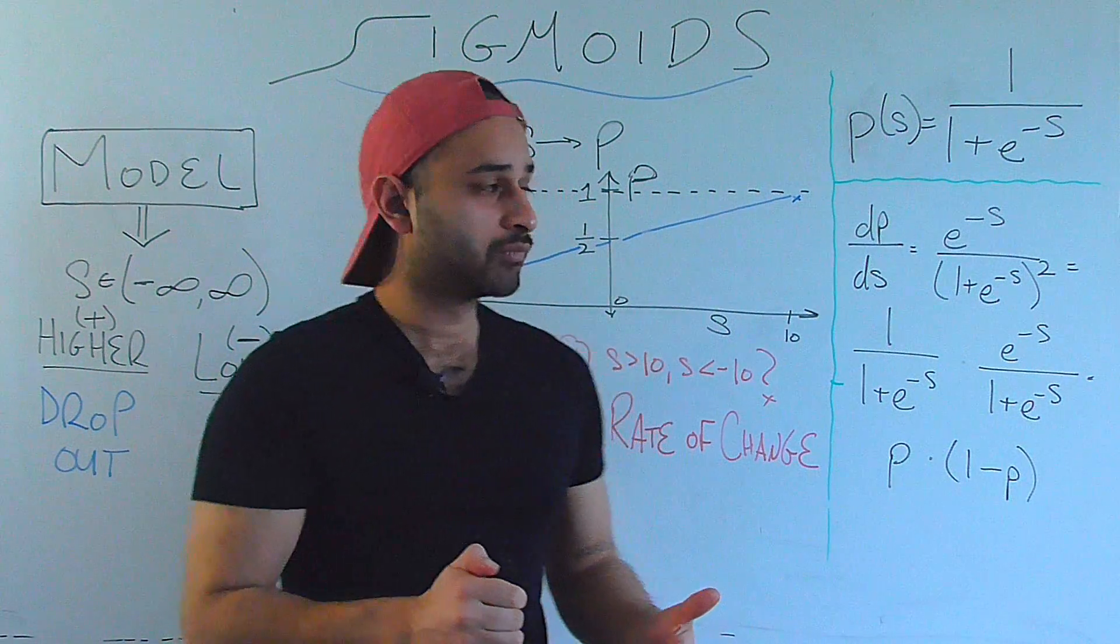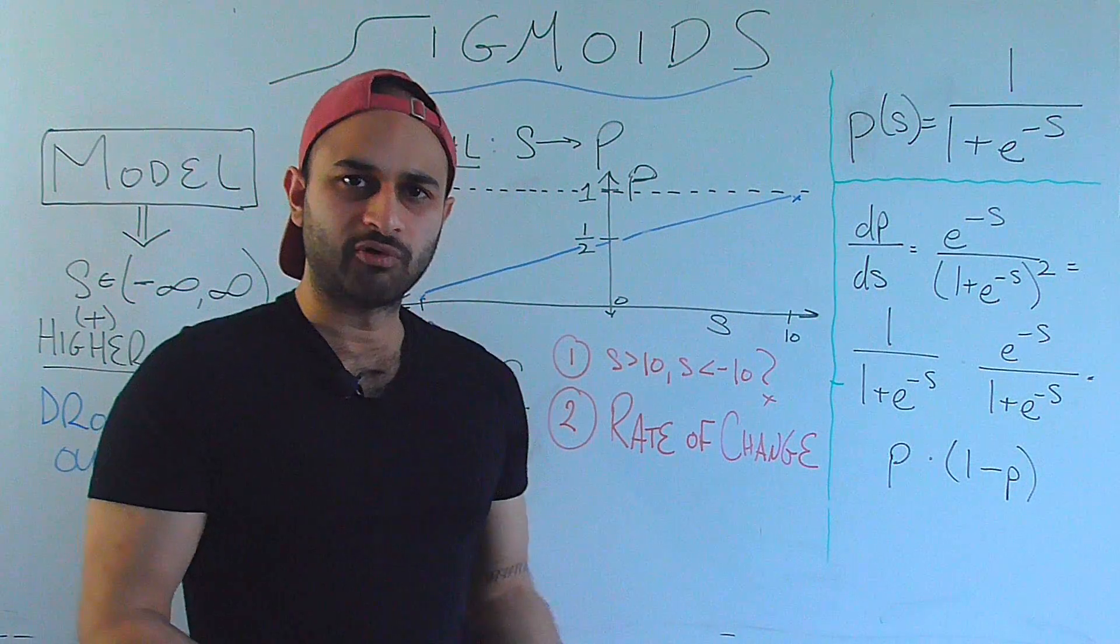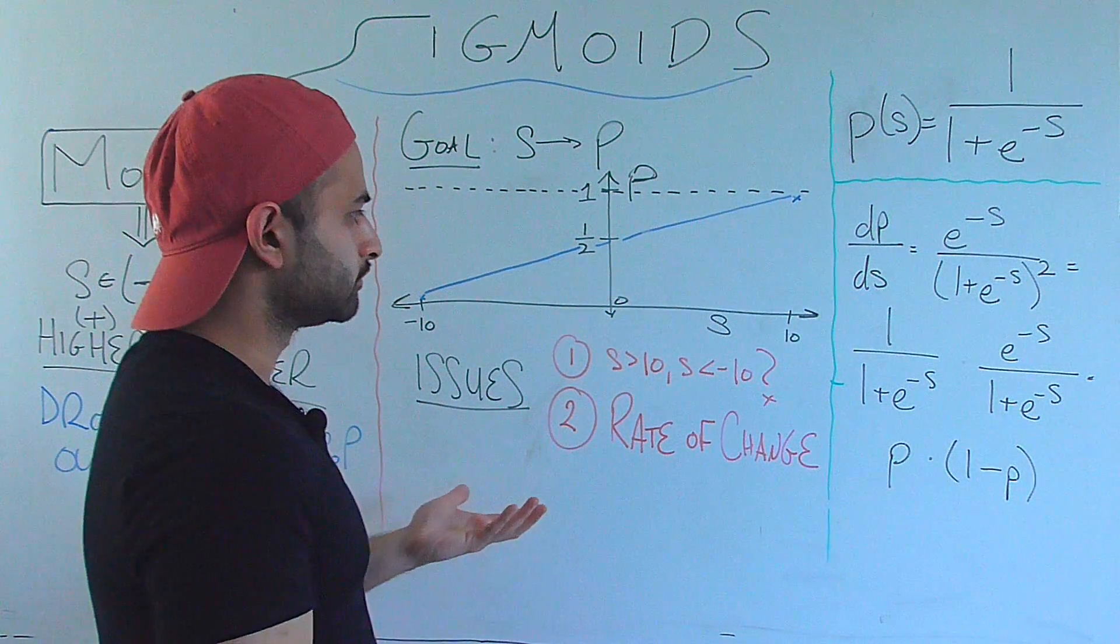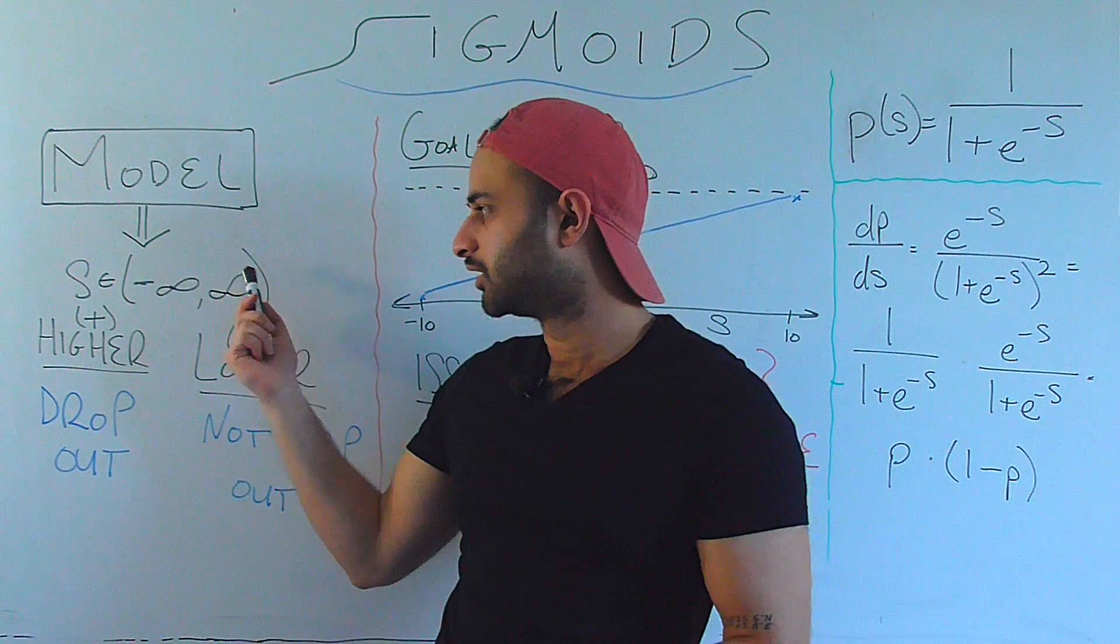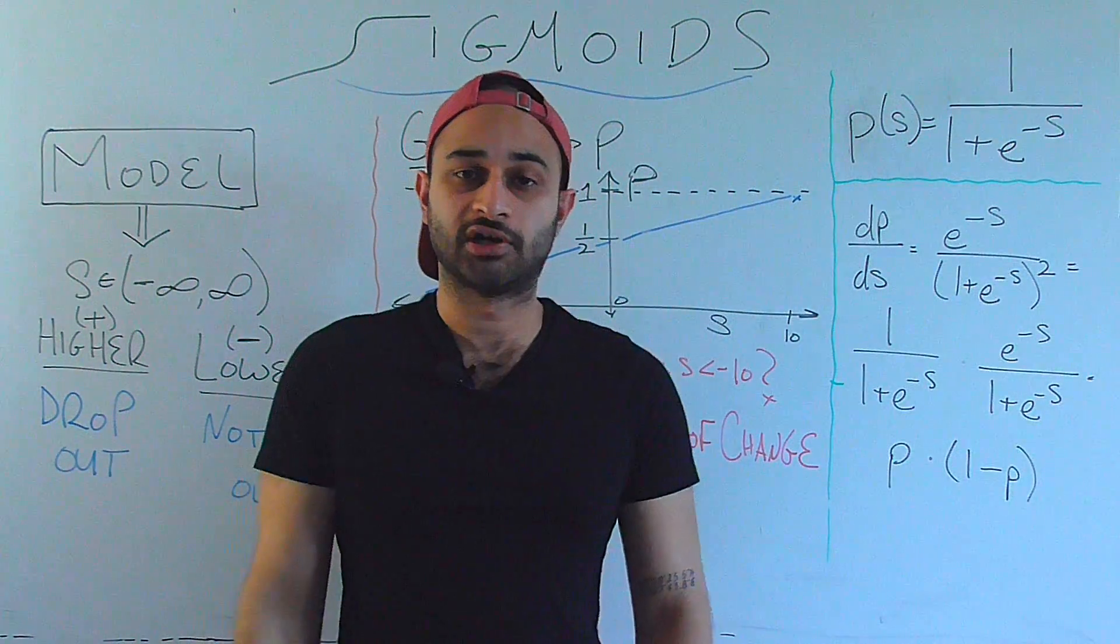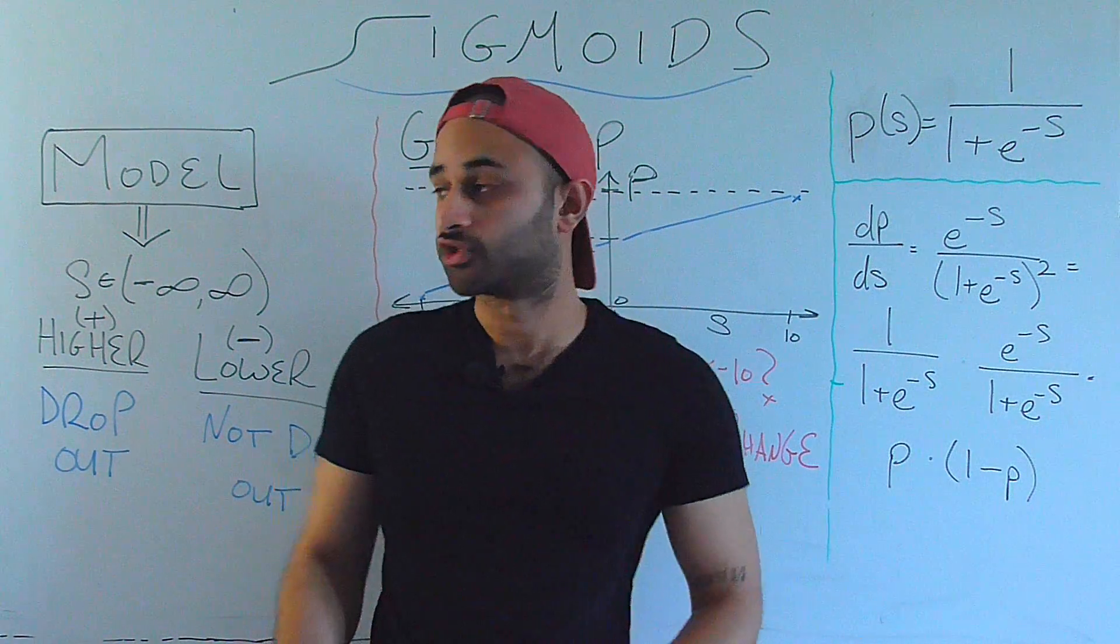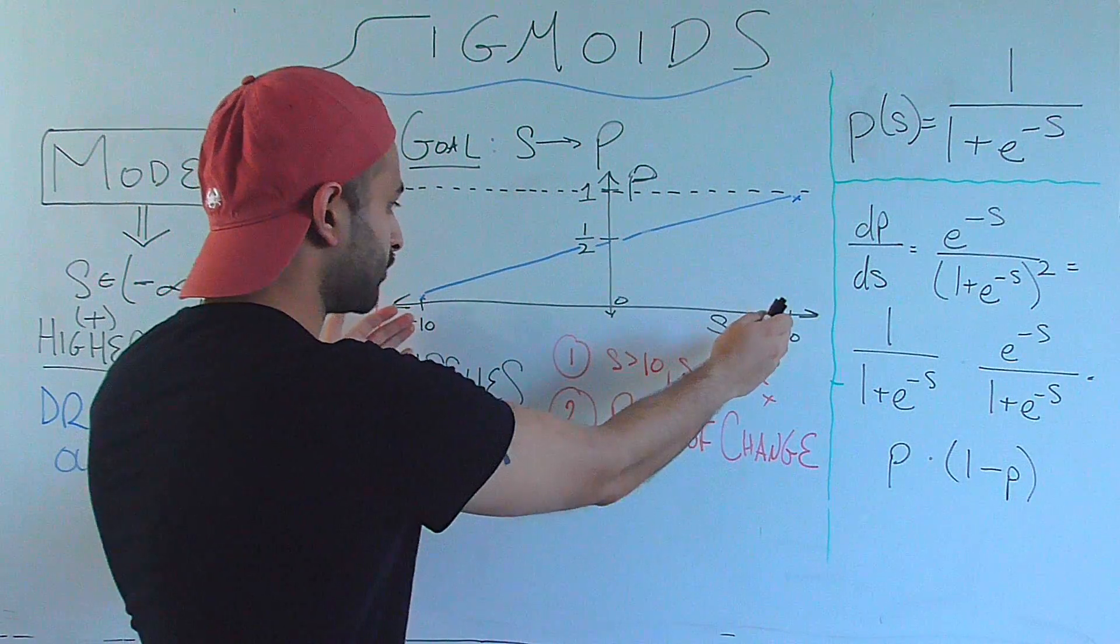So that's the motivation. Now the first natural thing we might do is just draw a straight line. So while I did say here that the score is bounded between negative infinity and infinity, of course if we consider some finite set of students when training our model, our score is going to be between two bounds.